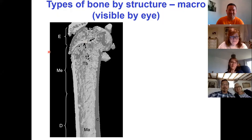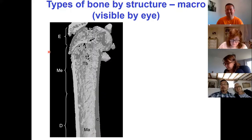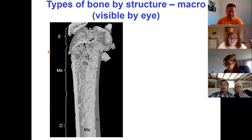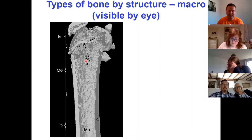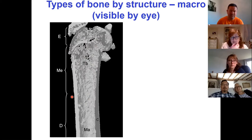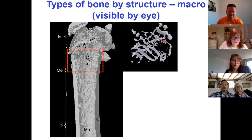Within a bone itself there are different types of bone structure. The next time you have a lamb shank or chicken, try splitting that bone open and have a look inside. Here we have a micro-CT cut through of a tibia: at the top is the epiphysis, then the metaphysis in the middle region, and down the middle is the diaphysis.